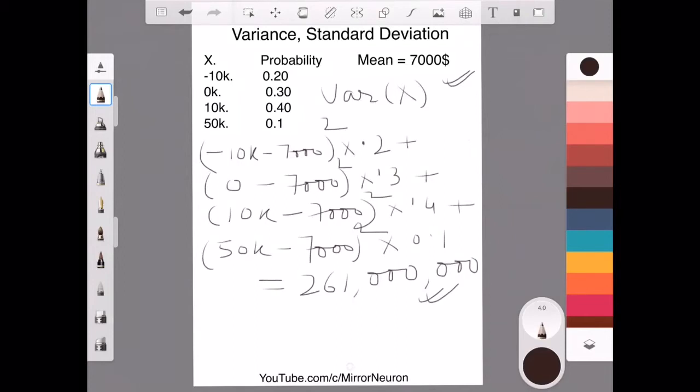That is why we always take a square root of this variance and that is denoted by a term called standard deviation and that is nothing but the square root of your variance. In our example this comes around roughly 16,155 dollar. So, it is no longer in square dollar rather it is in dollar, just the unit dollar, then it makes some sense.